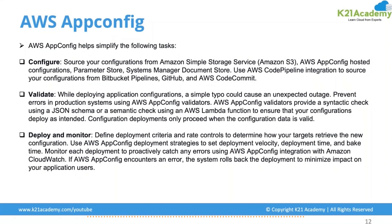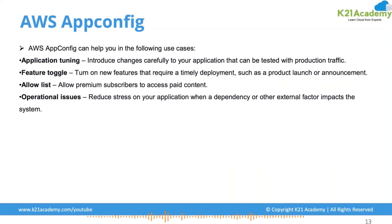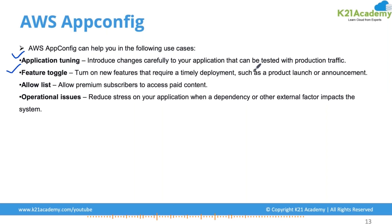AWS App Config can help you in the following use cases. First, application tuning: introduce changes carefully to your application that can be tested with production traffic. You can tune configuration changes so they can be tested for production traffic and then released accordingly.